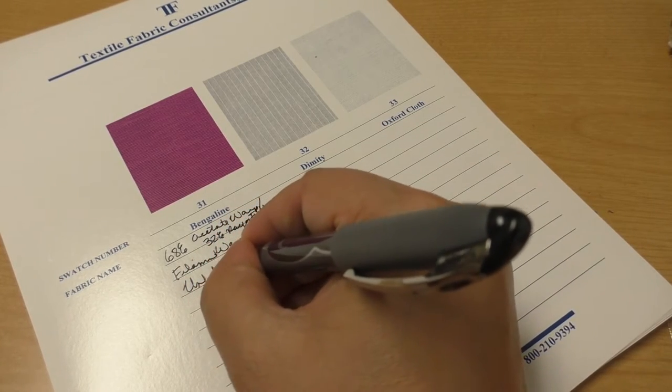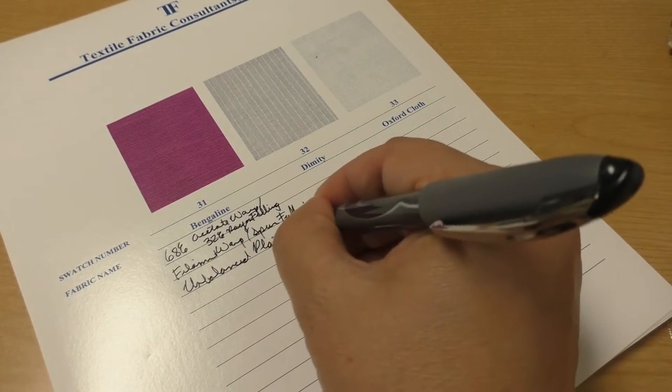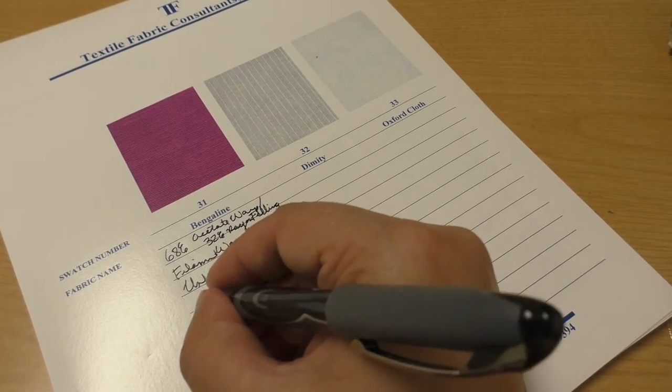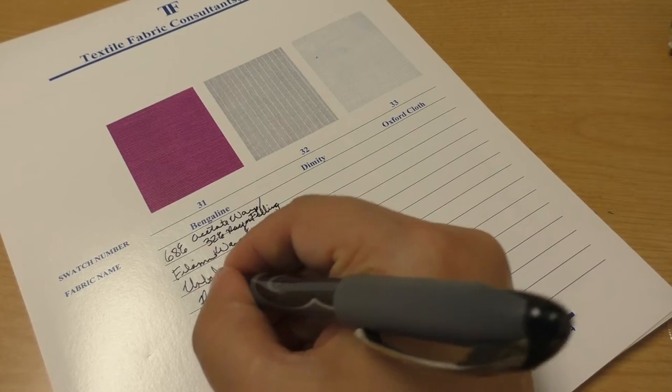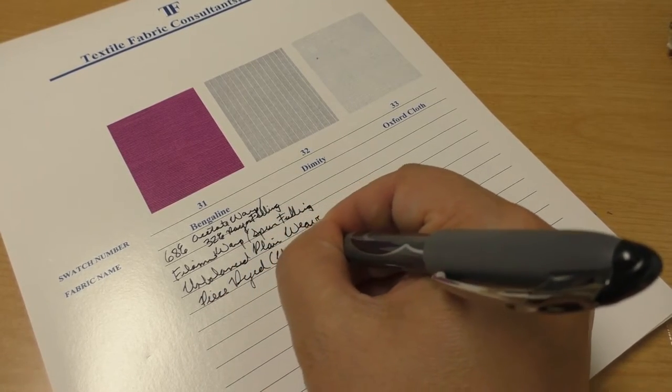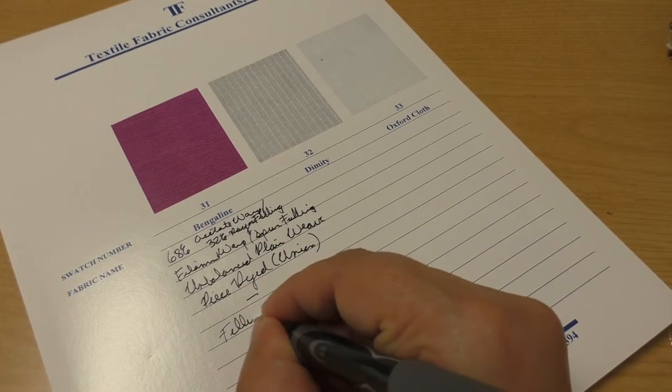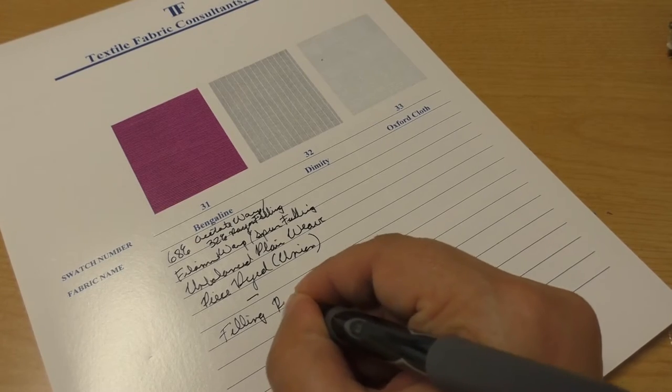This unbalanced plain weave is the last example in this section of unbalanced plain weaves. This one is piece dyed using union dyeing to get a single color with two different fiber types. No finish. It has the filling ribs that we've seen in some other swatches.